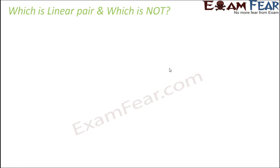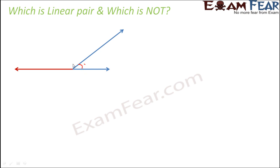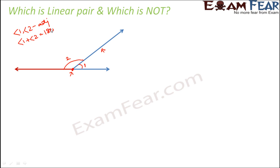Now let us look at examples to check which angles form a linear pair and which do not. In the first example, angle one and angle two are adjacent — they have a common vertex, a common arm, and no common interior points. Together they form a straight line of 180 degrees, so angle one plus angle two equals 180 degrees. Therefore, yes, they form a linear pair.